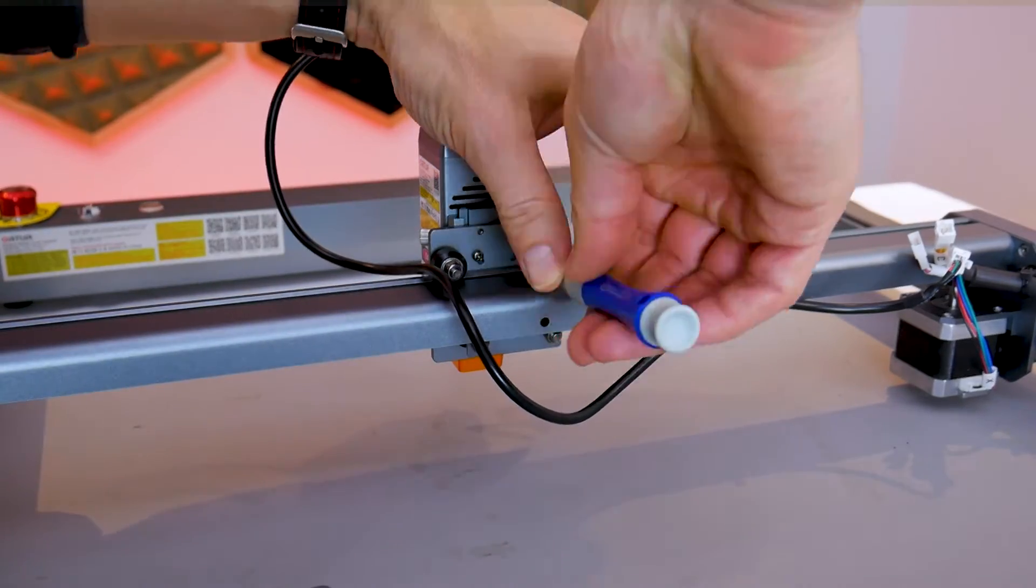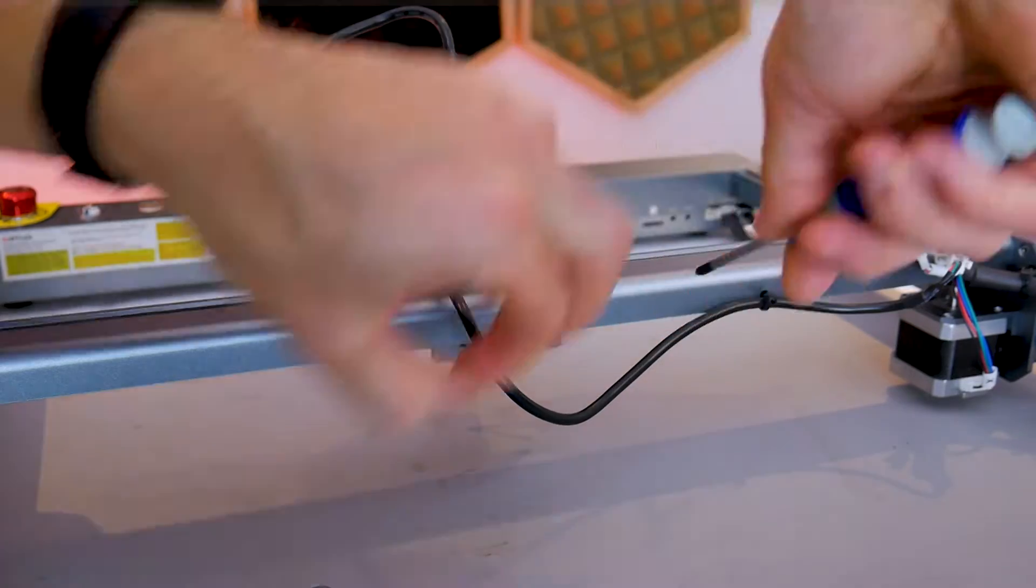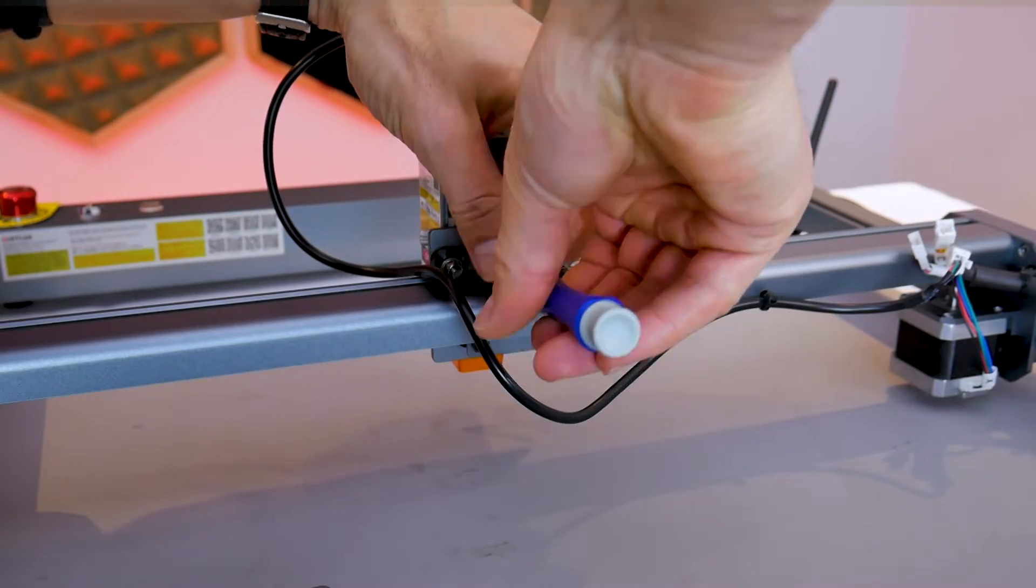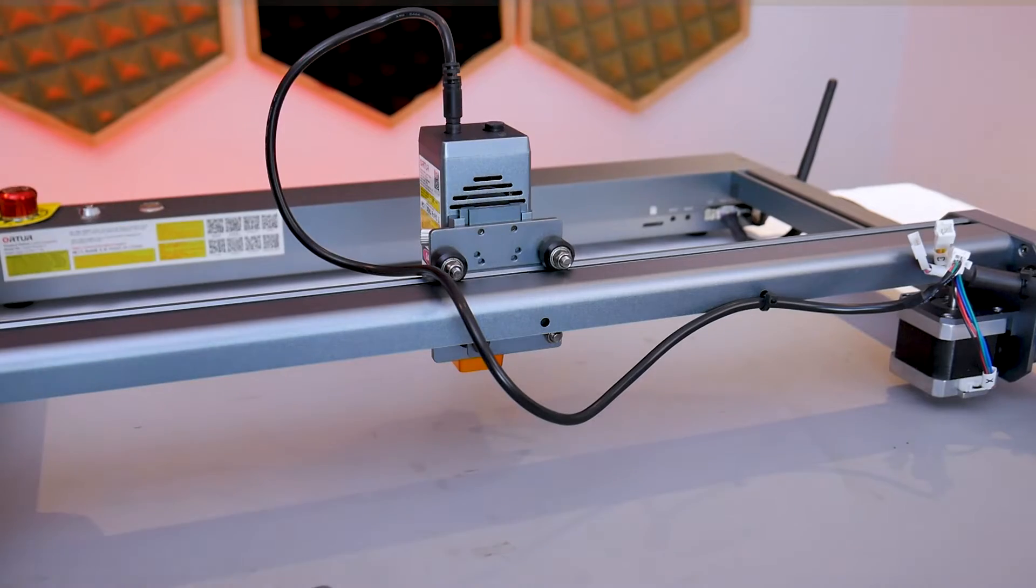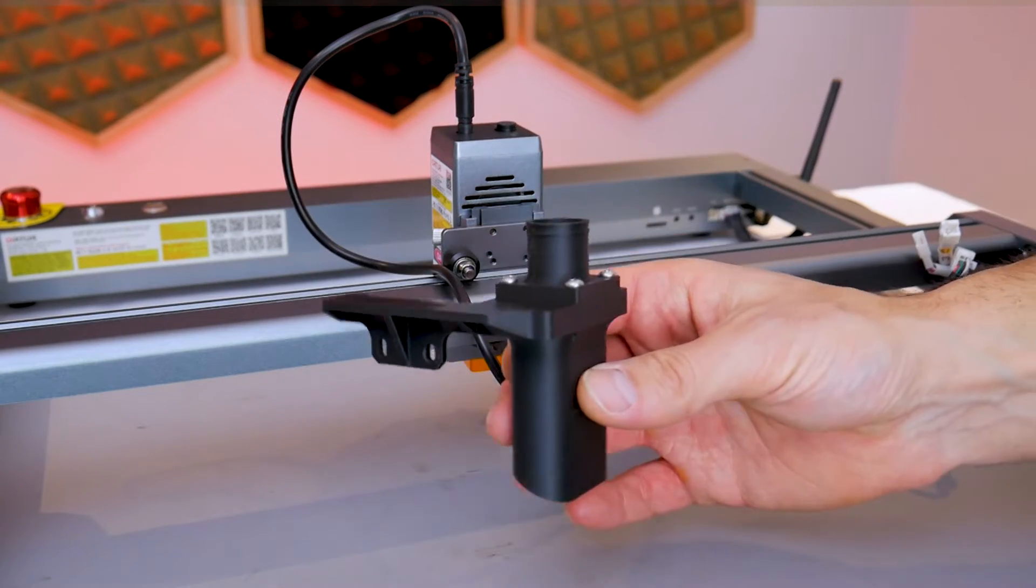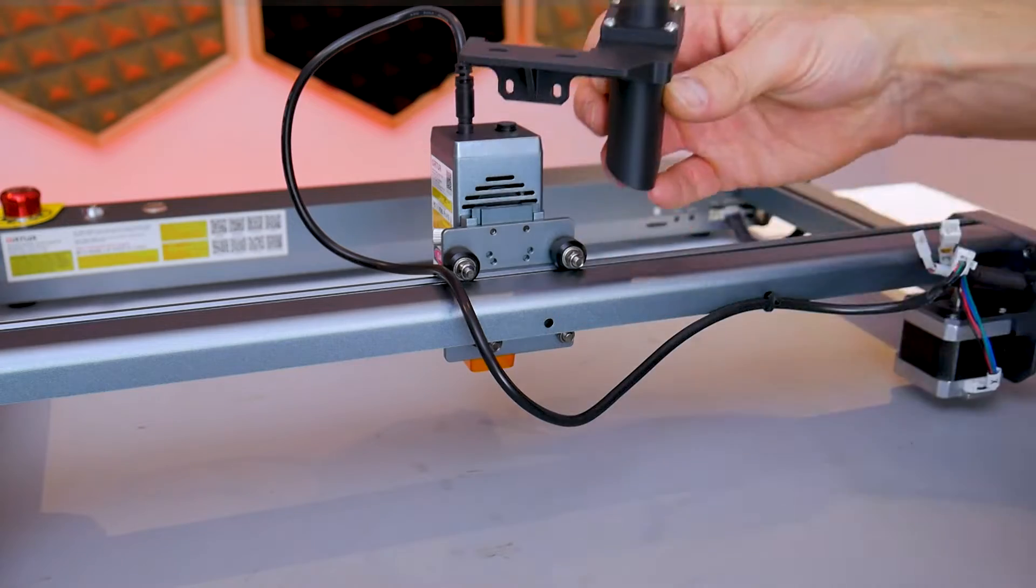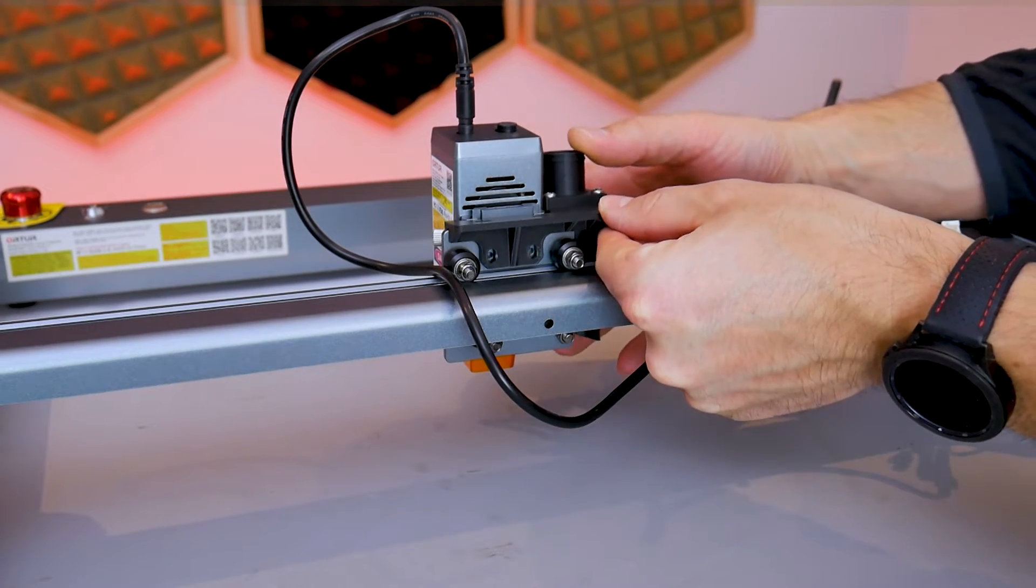The two Phillips head screws can be completely removed—we're not going to be reusing these as the kit comes with its own hardware. Once you have the two screws removed, bring in the new smoke and fume extractor nozzle, and it's designed to sit right on top of the X gantry bracket.